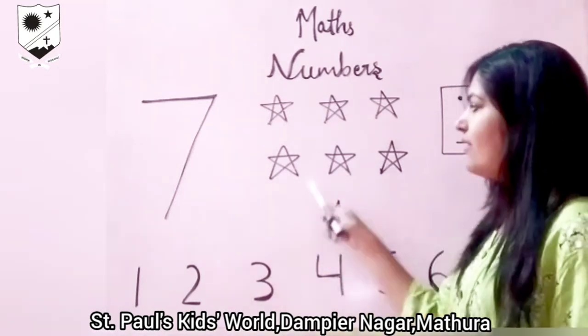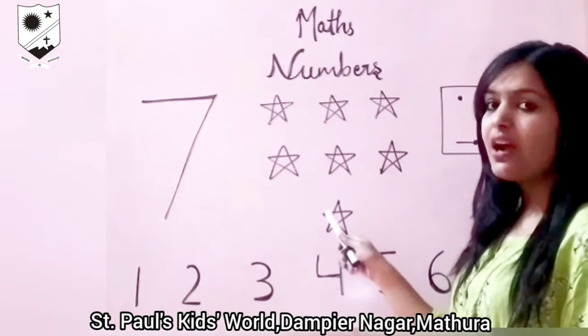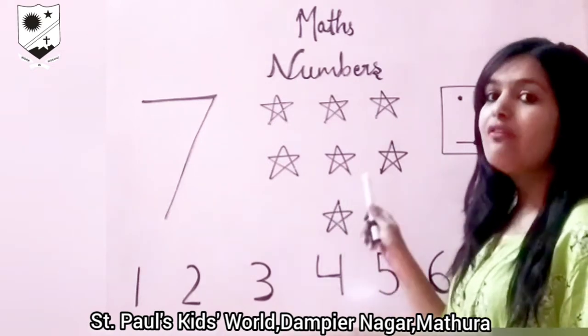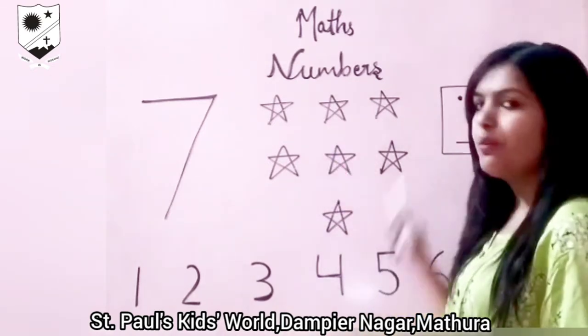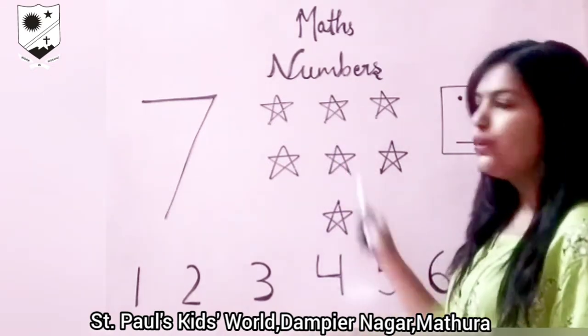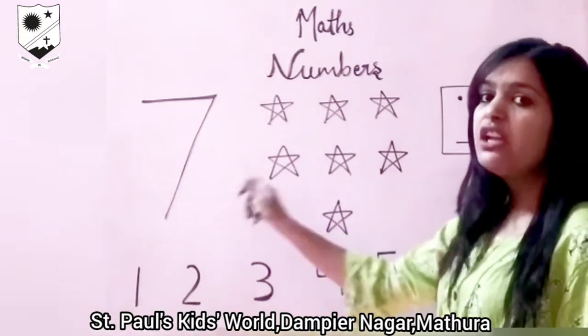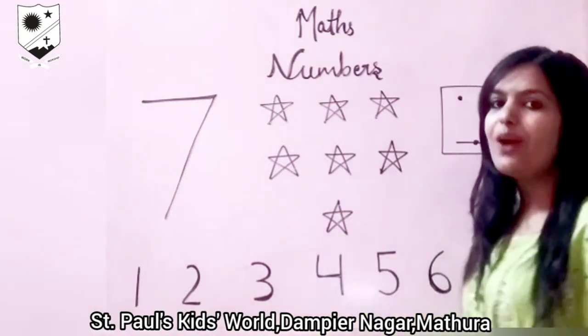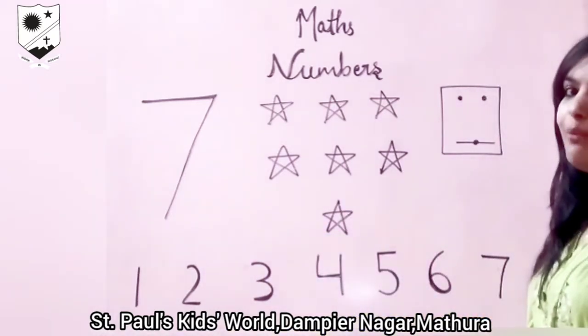With number 7 I have drawn 7 stars because when we want to represent 7 objects we use number 7. Now we will learn how to write number 7 in the box.